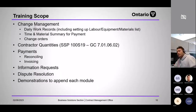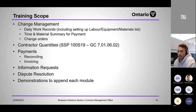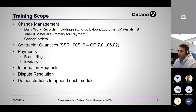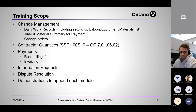Change management covers: daily work records; time and material summary for payment, which DWRs lead to; and change orders — we'll talk about the four bases of payment for change orders. We'll also cover contractor quantities — formerly item postings — which contractors use to submit quantities weekly based on 100S19, a recent change based on Construction Act changes. Then payments, reconciling and invoicing, information requests, compensation requests, and dispute resolution.